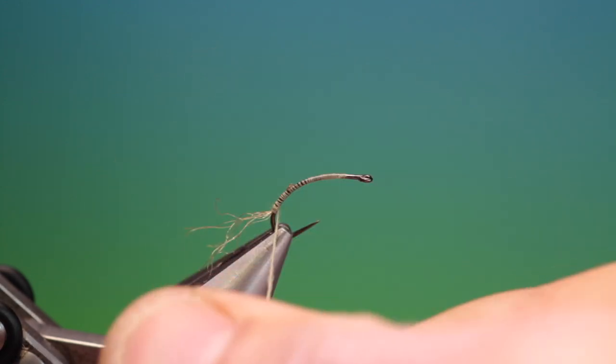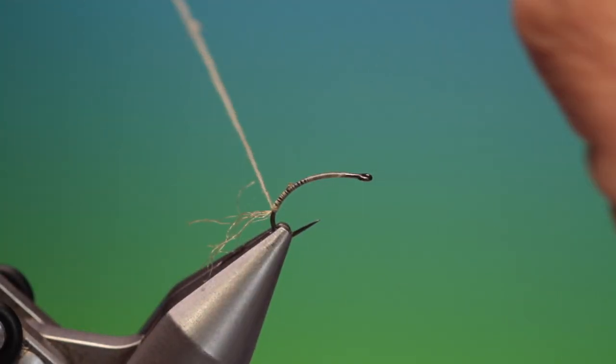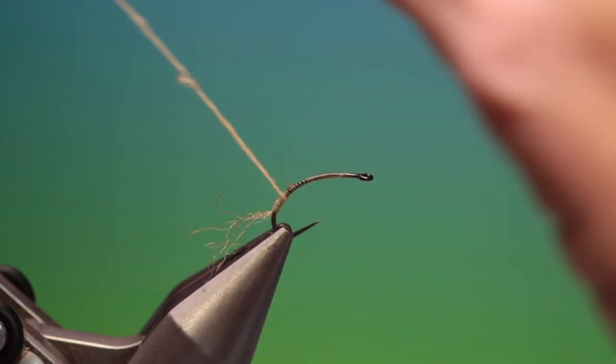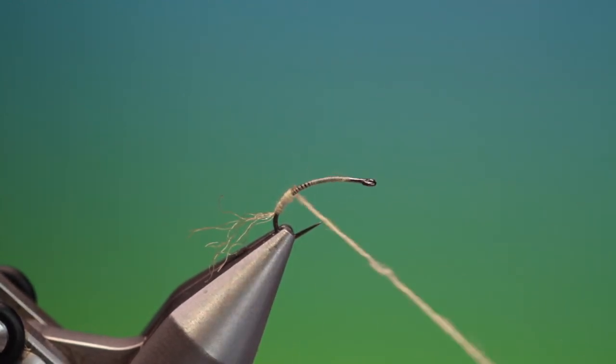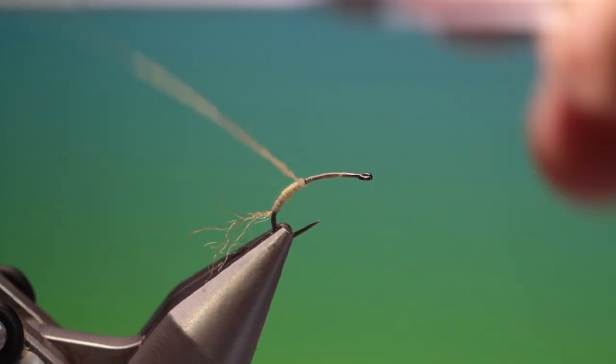Tighten it up and then we can go up and make a fine tapering body, getting a little larger as we approach the thorax.